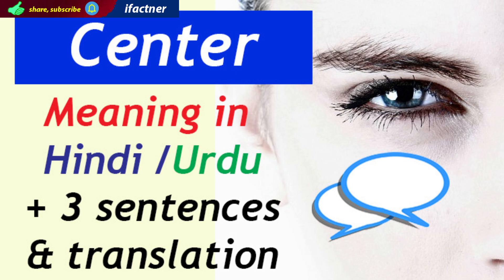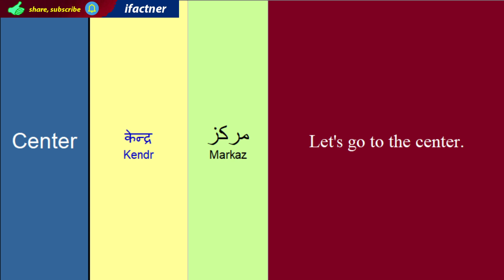Shuru kertay hain aaj ka iFactner ka learning video tutorial. Dosthoon, word 'center' ka meaning hootay hain kendera ya phir markaz. Jis tarha center of gravity hootay hain — zameen ka markaz, zameen ka kendera. Isi tarha, joo badeh shahar hootay hain, unka joo markazi bazaar hootay hain, usay central market kehtay hain, ya phir simply us ko center kehtay hain.